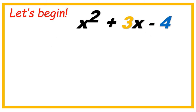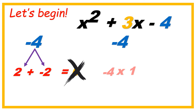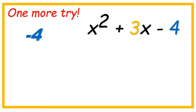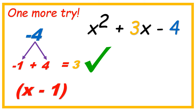Let's begin. Negative 4: let's try 2 times negative 2 — yes, the answer is negative 4, but when we add them, 2 plus negative 2, the answer is 0 — that's not it. Let's try negative 4 times 1: the answer is negative 4, but negative 4 plus 1 is negative 3 — no, that's not the answer. One more try: negative 1 times 4 is negative 4, and when we add negative 1 plus 4, the answer is 3. We got it! The factors are x minus 1, x plus 4. We got it! Just like that!